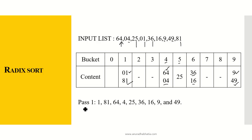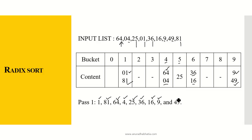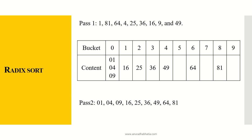While writing the output for pass 1, please write down in the same order as they are written in the buckets — do not jumble up the orders. So the output is: 01, followed by 81, next is 64, next is 04, then 25, 36, 16, 9, and 49. This is the list after pass 1 of radix sort. Now pass 1 output becomes the input for the next pass.